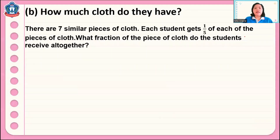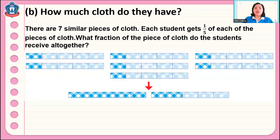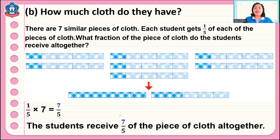Another problem: there are seven similar pieces of cloth, and each student gets one fifth of each piece of cloth. What fraction of the piece of cloth do the students receive altogether? There are seven one fifths. If we combine them all together, we get seven fifths. So the students receive seven fifths of the piece of cloth altogether, which as a mixed number is one and two fifths.